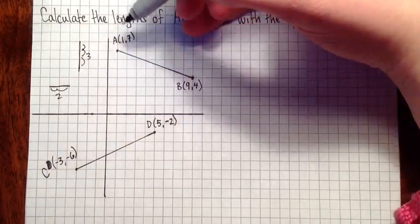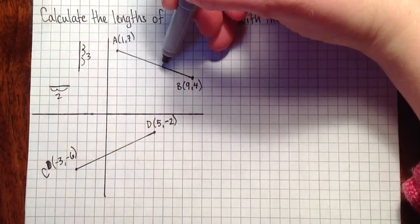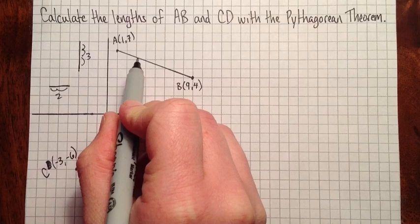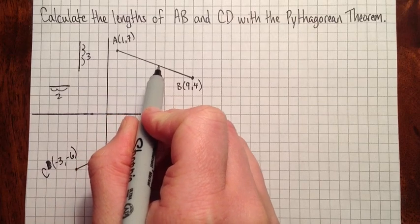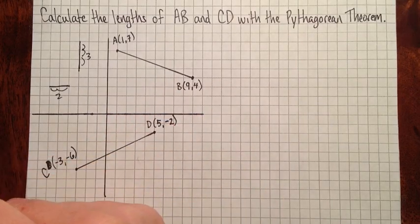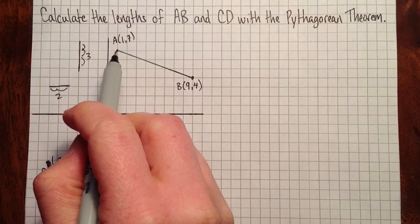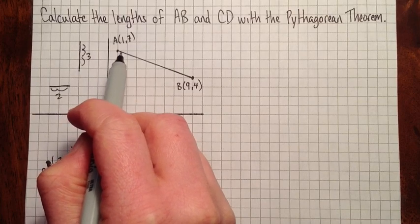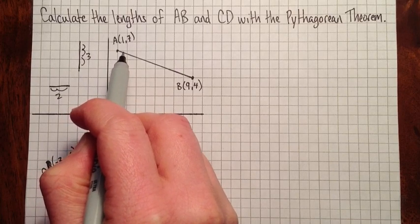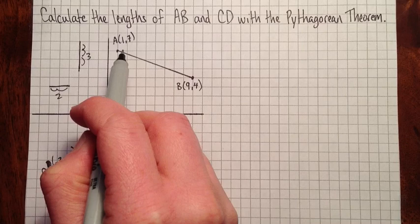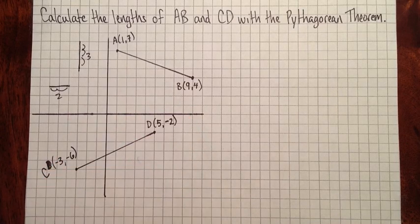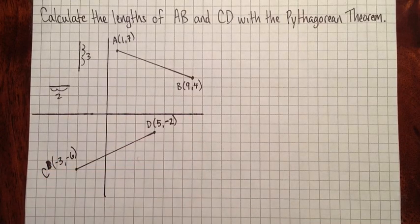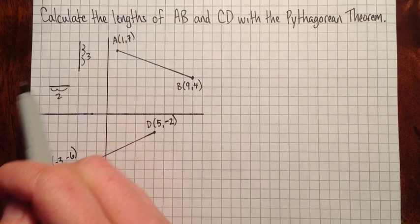But we can't do that with a diagonal line segment because these pieces between the grid lines they're not all exactly one unit long. In fact almost none of them will be one unit long. Just because they're diagonal, this one for example, the first bit, it's a little bit longer than it would be if we just went straight over to the next line. So we can't just count the squares unless we've got horizontal and vertical segments.